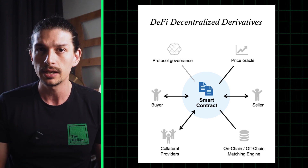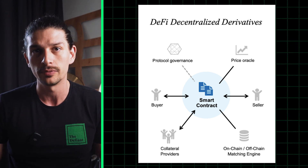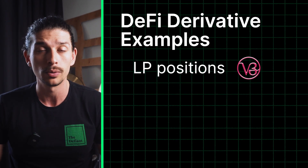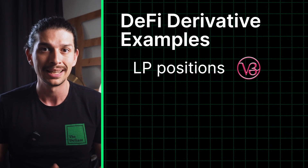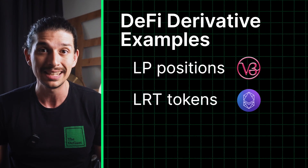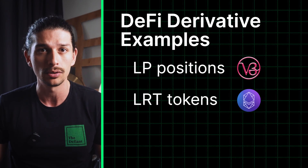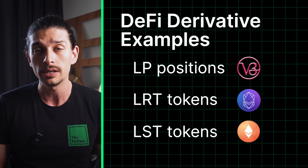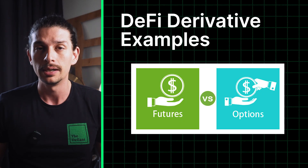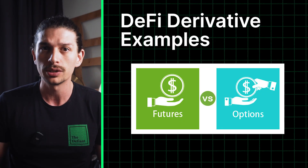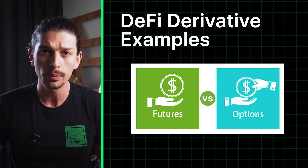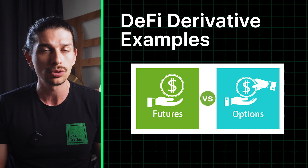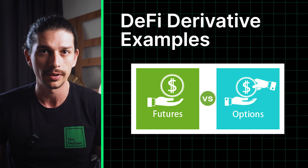In DeFi, these contracts come in various forms. You've got LP positions like those on Uniswap V3, liquid restaking tokens such as EETH by Ether.Fi, or liquid staking tokens such as REETH by Rocketpool. And if you're familiar with traditional instruments like futures and options trading, these are also available on-chain in DeFi.